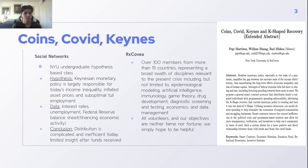What we essentially tried to do is some simple linear regression against the Fed mandate using Fed policy to see if the Fed was achieving what they were setting out to do. Our conclusion was that today's distribution is pretty complicated and relatively inefficient, and there's limited insight into what is done with funds after they are received, who uses them, and what they're used for.